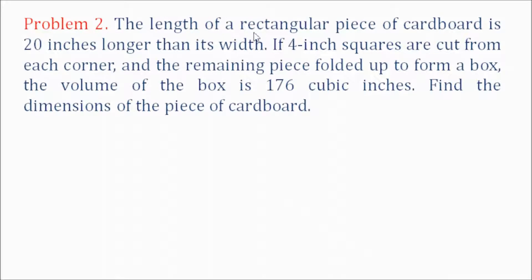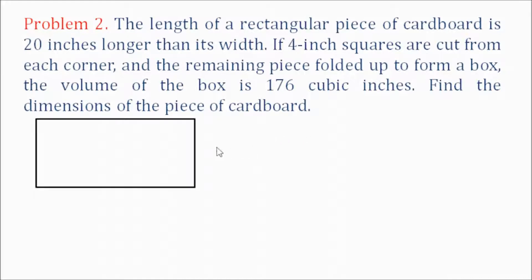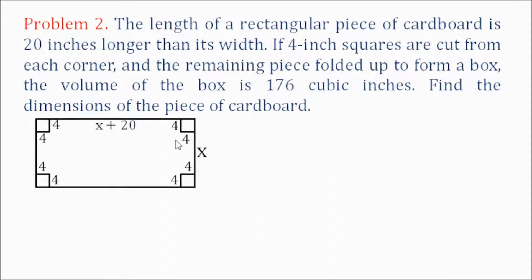Now let's do another problem. The length of a rectangular piece of cardboard is 20 inches longer than its width. If 4 inch squares are cut from each corner and the remaining piece folded up to form a box, the volume of the box is 176 cubic inches. Find the dimensions of the piece of cardboard. We let x be our width, and our length is x plus 20. A square from each corner is cut with side 4 inches and then the sides are folded up to form a box.